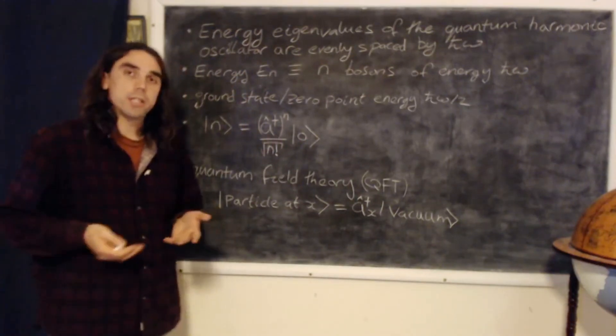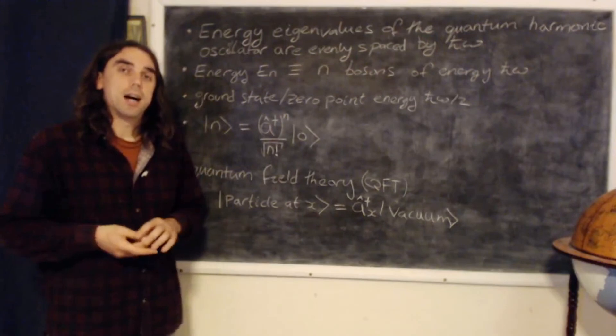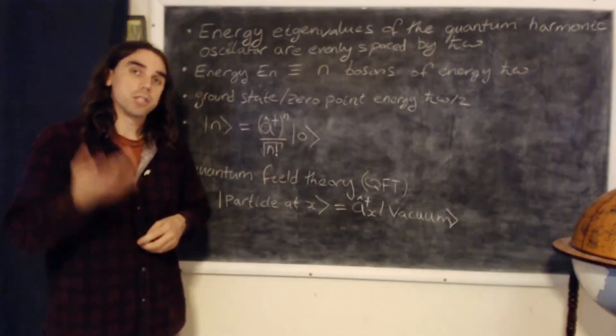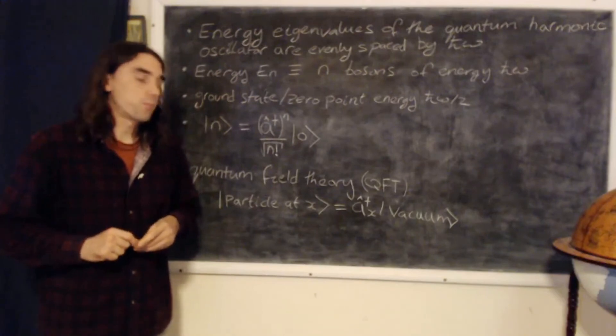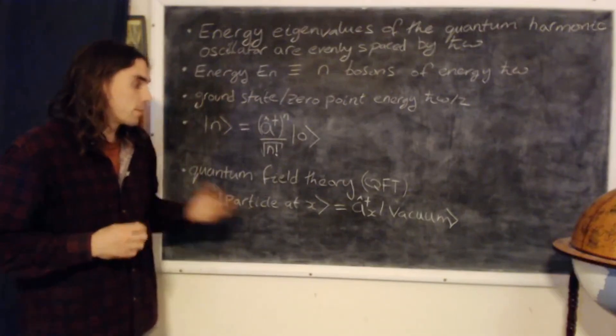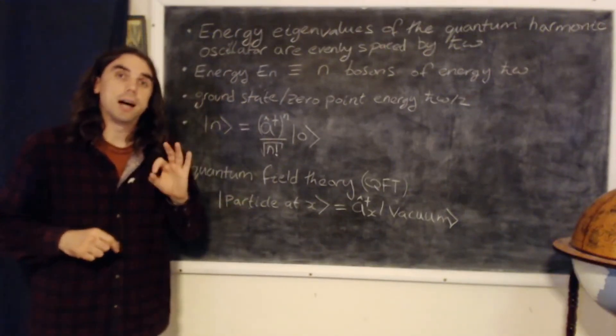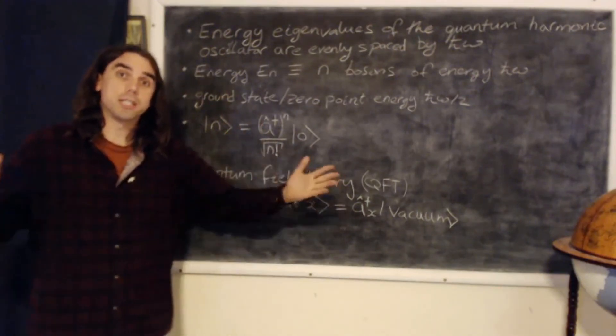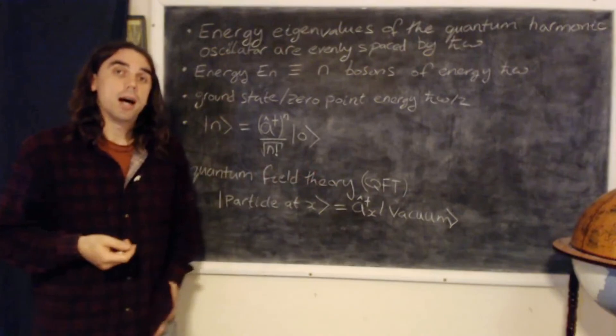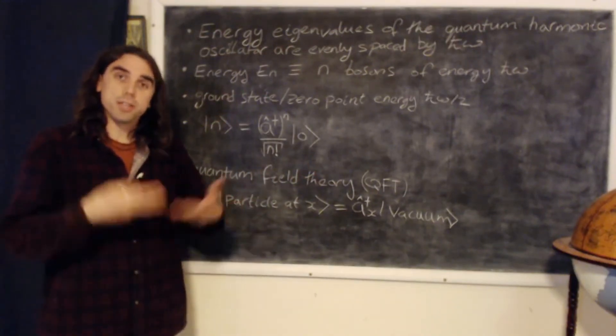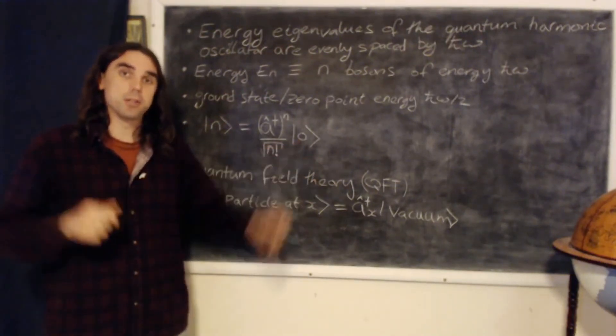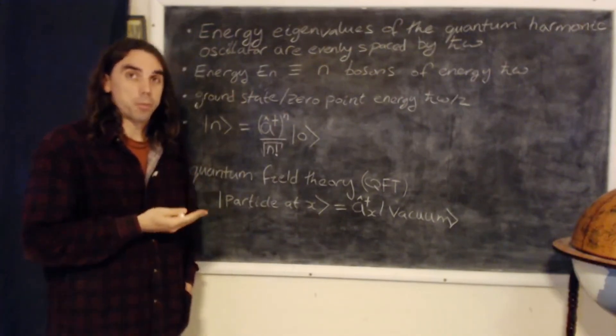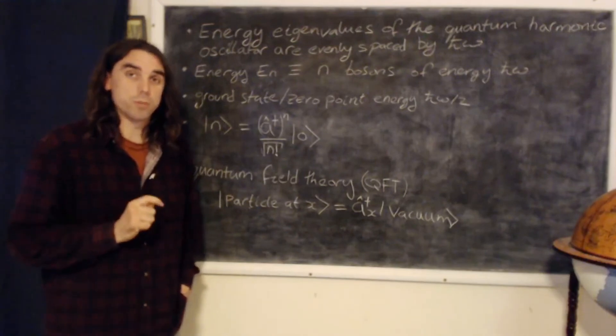So the quantum field theory describes the universe as made up of quantum fields for different particles, and the particles are excitations out of those fields. And mathematically, what it does is assign a simple harmonic oscillator, a quantum harmonic oscillator, at each point in space. And it describes the emergent universe coming out of that as excitations of those harmonic oscillators. So by solving the harmonic oscillator problem in quantum mechanics, that's the basis for all of quantum field theory.